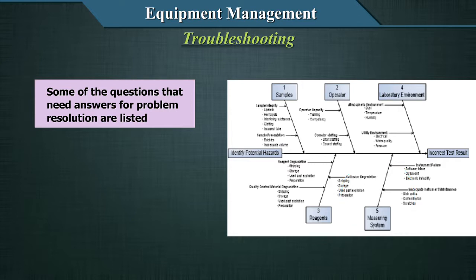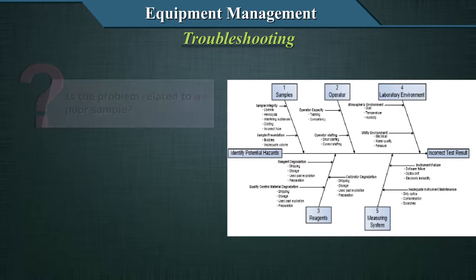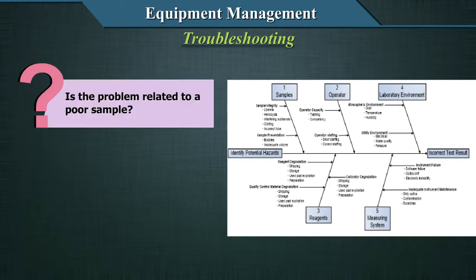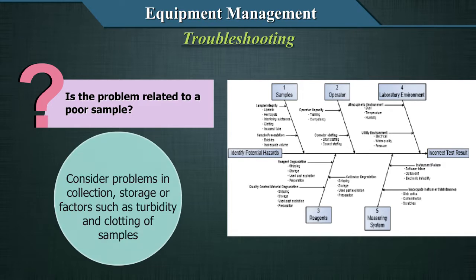So here, we are not just talking about the equipment. Equipment is just part of the problem. But whenever you are troubleshooting, you would consider all of these comprehensively. Is the problem related to a poor sample? Consider problems in collection, storage, or factors such as turbidity and clotting of samples.